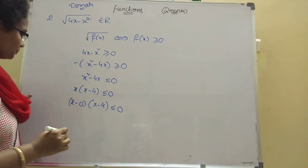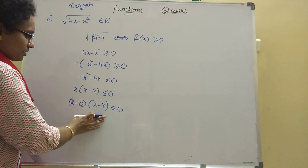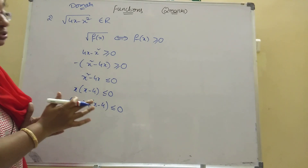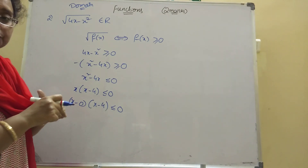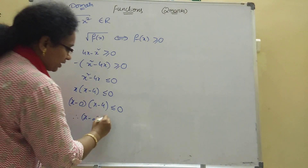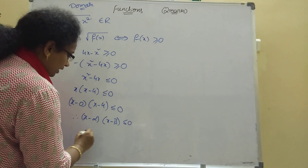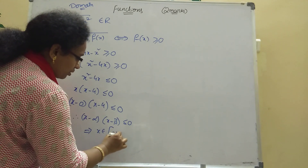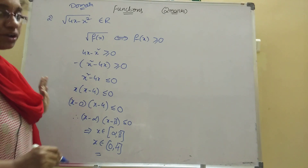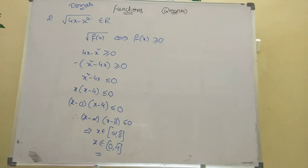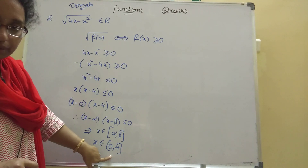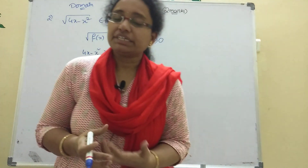Using the formula: if (x - α)(x - β) ≤ 0, then x belongs to the closed interval [α, β]. Here alpha = 0 and beta = 4, so x belongs to [0, 4]. Closed brackets because equal to is present. Therefore, the domain is [0, 4]. Next video will continue with range and inverse sums.